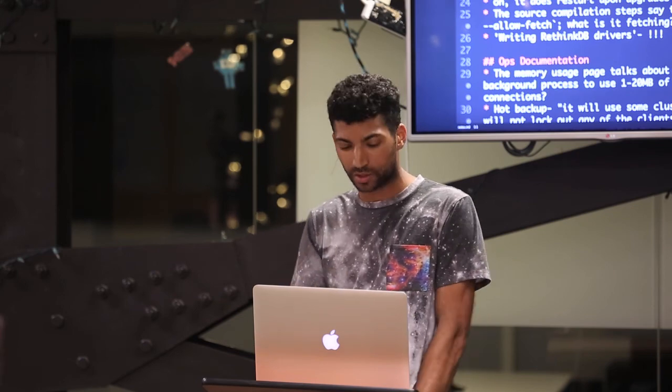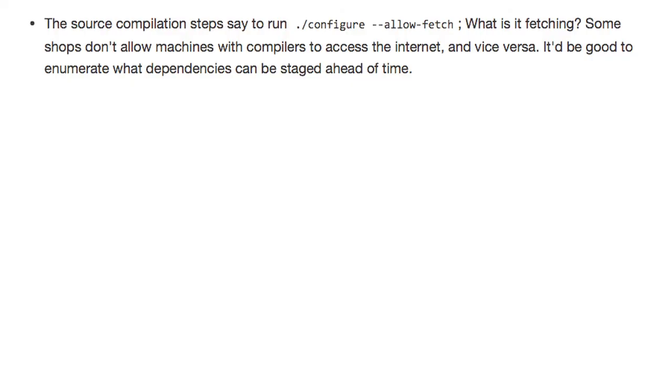Another portion of the getting started documentation — the compilation steps for building from source — say to run ./configure --allow-fetch, which scares me. A lot of shops do not allow machines with compilers to access the internet. So if I wanted to run this on a machine without external internet access, what would I need to stage in place beforehand to run ./configure without the --allow-fetch option? I think that would be great to add to the documentation.